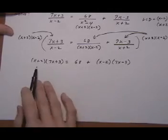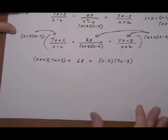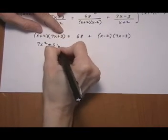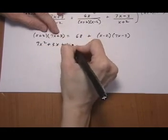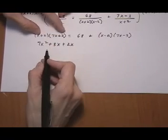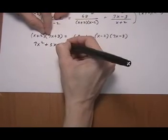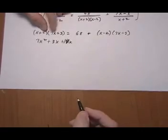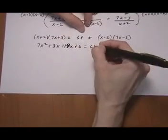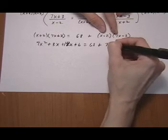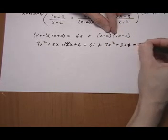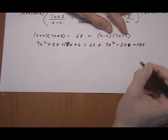And now we have a large linear equation that we're going to solve. So first let's clear parentheses. 7x squared plus 3x plus 14x here, not 2. Plus 6 equals 68. Plus, again, foil it out. 7x squared minus 3x minus 14x and then plus 6.